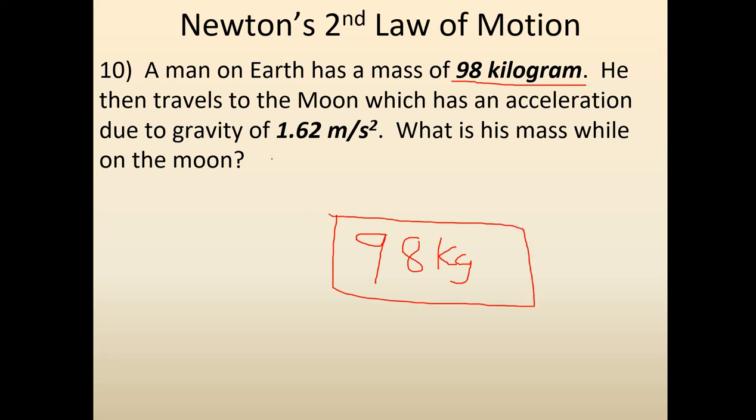Mass never changes. Remember, the definition of mass is the amount of matter that an object has. So unless you're cutting off a limb, your mass does not change, depending on where you are. Therefore, if the man has a mass of 98 kilograms on Earth, he has a mass of 98 kilograms on the moon. If you happen to take this 98 and multiply it by the 1.62 that they have here, what you found was his weight on the moon. But the mass never changes. This is one of those questions that they love asking. It comes up all the time and it's a question that tricks people.